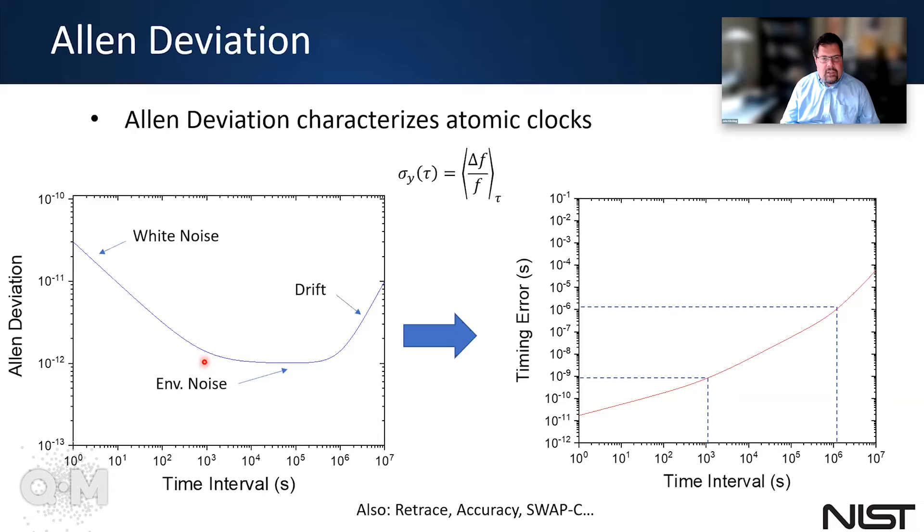And so typically these Allen deviations look something like this plot here. You have a white noise component at short integration times, which integrates down, that allows you to measure the frequency more precisely. And then usually some forms of environmental noise kick in at some point, maybe in the range of a few thousands of seconds or something. And then drift will typically take over at very long integration times and will limit the stability. Some clocks can integrate down almost perfectly for however long you want, but most clocks look something like this.